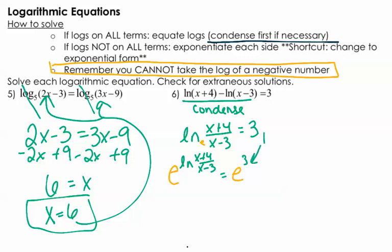This right here, that's a number. You're going to get that number from your calculator. So now I'm going to go ahead and cancel these out because that's what exponential bases do to logarithms. So I'm going to end up with x plus 4 divided by x minus 3 equals whatever e to the third power is. And e to the third power is a number in my calculator. It's about 20.086.